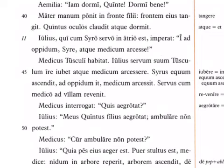Picking up at line 44: Medicus Tusculi habitat — the doctor lives in or at Tusculum. Now Tusculi looks like it's genitive, but that is the locative case — locative, related to location in English. It's a case used to show place where, and it usually looks like a genitive or dative when singular. So Tusculi tells where he lives; the doctor lives at Tusculum. Remember, the villa of Julius is just outside of Tusculum, so it's not far to go.